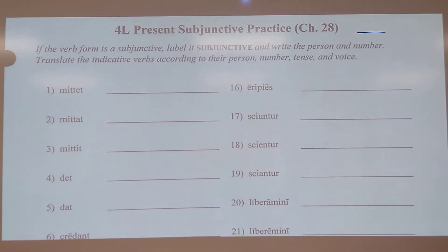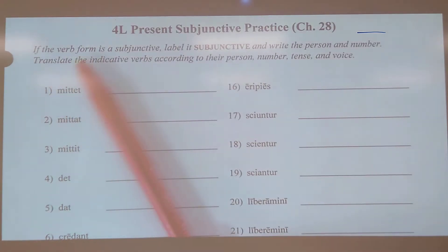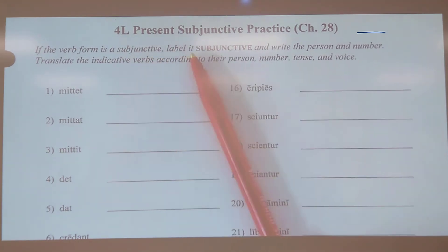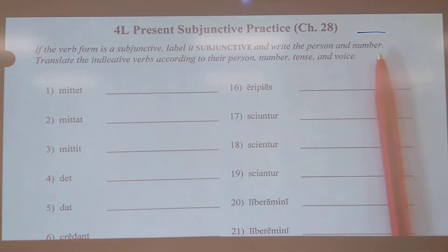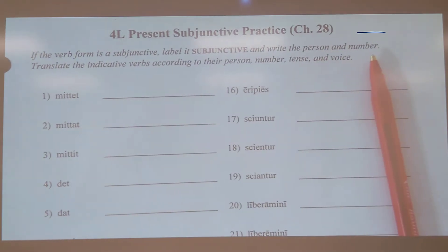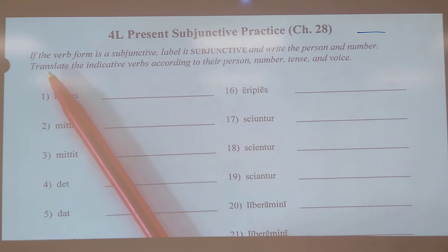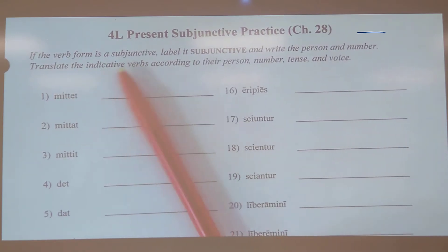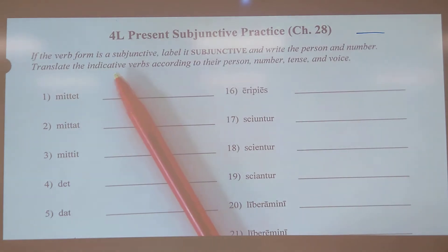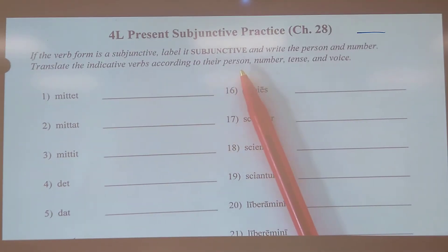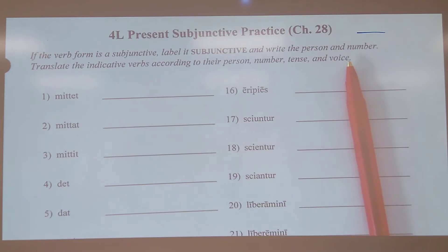Now that I've scared everybody away, let's go ahead and look at what we have. Your instructions say: if the verb form is subjunctive, label it subjunctive and write the person and number — first, second, or third person, singular or plural. You can tell just by the ending, because in the present subjunctive the endings don't really change; it's just the stem vowel that does. But if you have a verb that is not subjunctive — if it's indicative — you're going to translate the verb according to its person, number, tense, and voice.